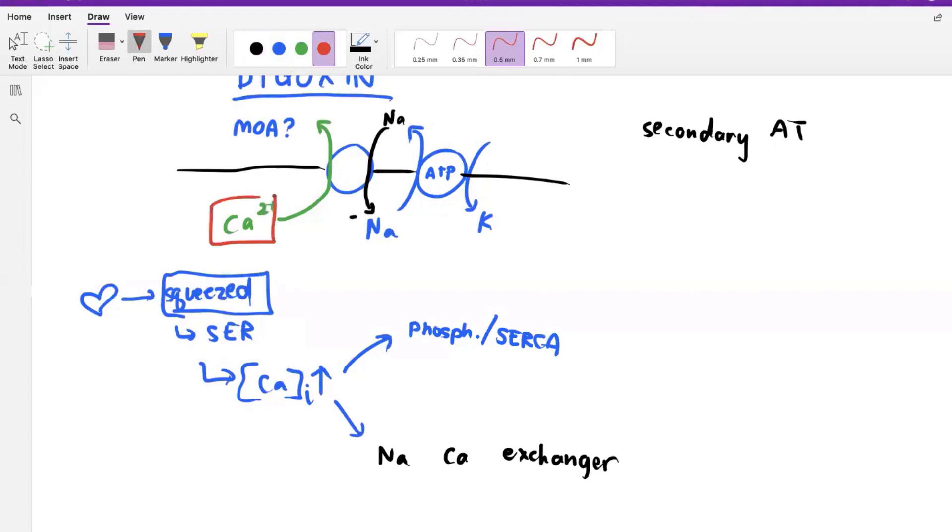And the USMLE is very keen on that because what it helps us understand is that we're using some gradient to extrude the calcium, and then we are creating another gradient from primary active transport. And that's why it's called secondary active transport, because it's indirectly using ATP.